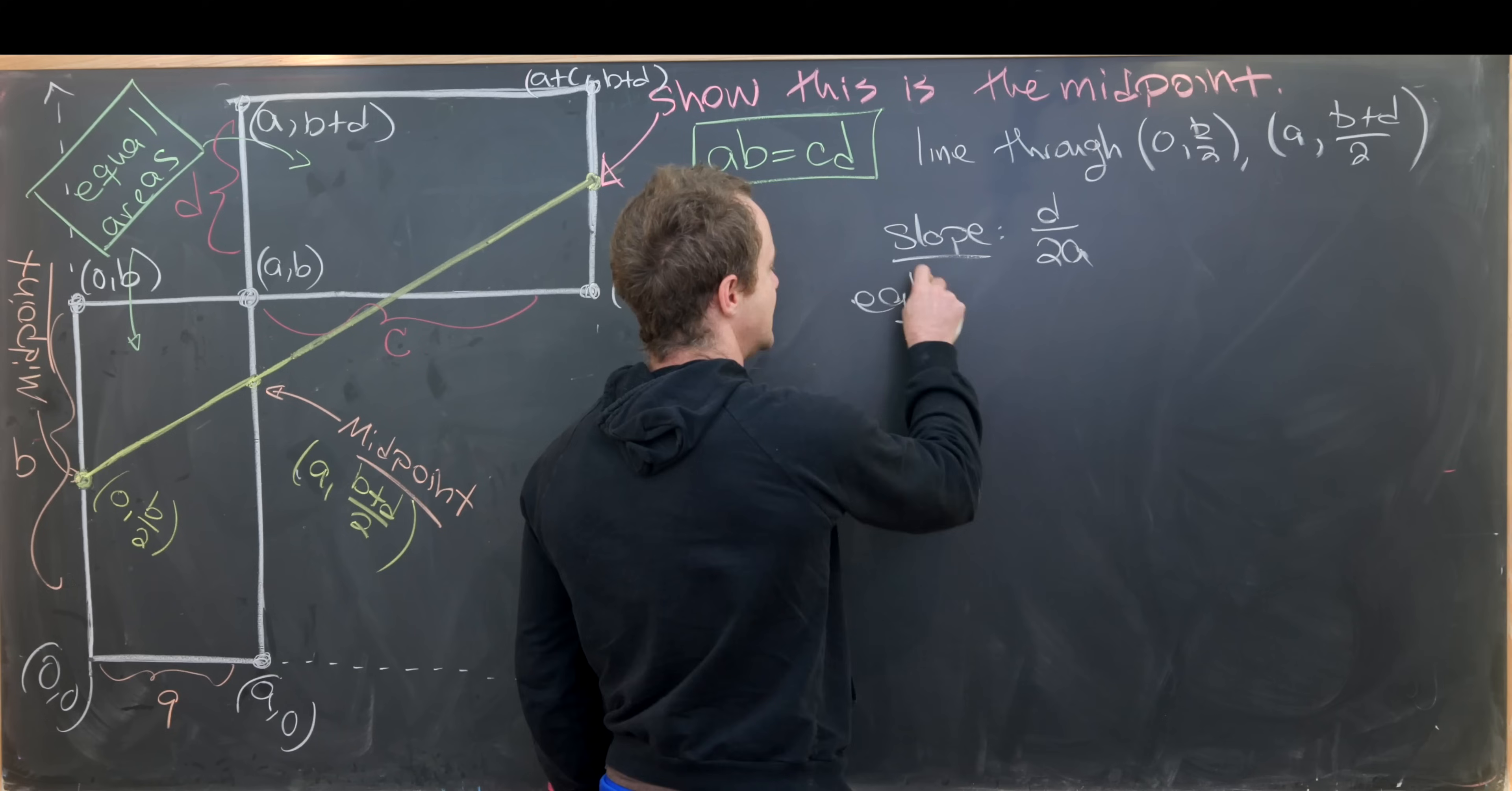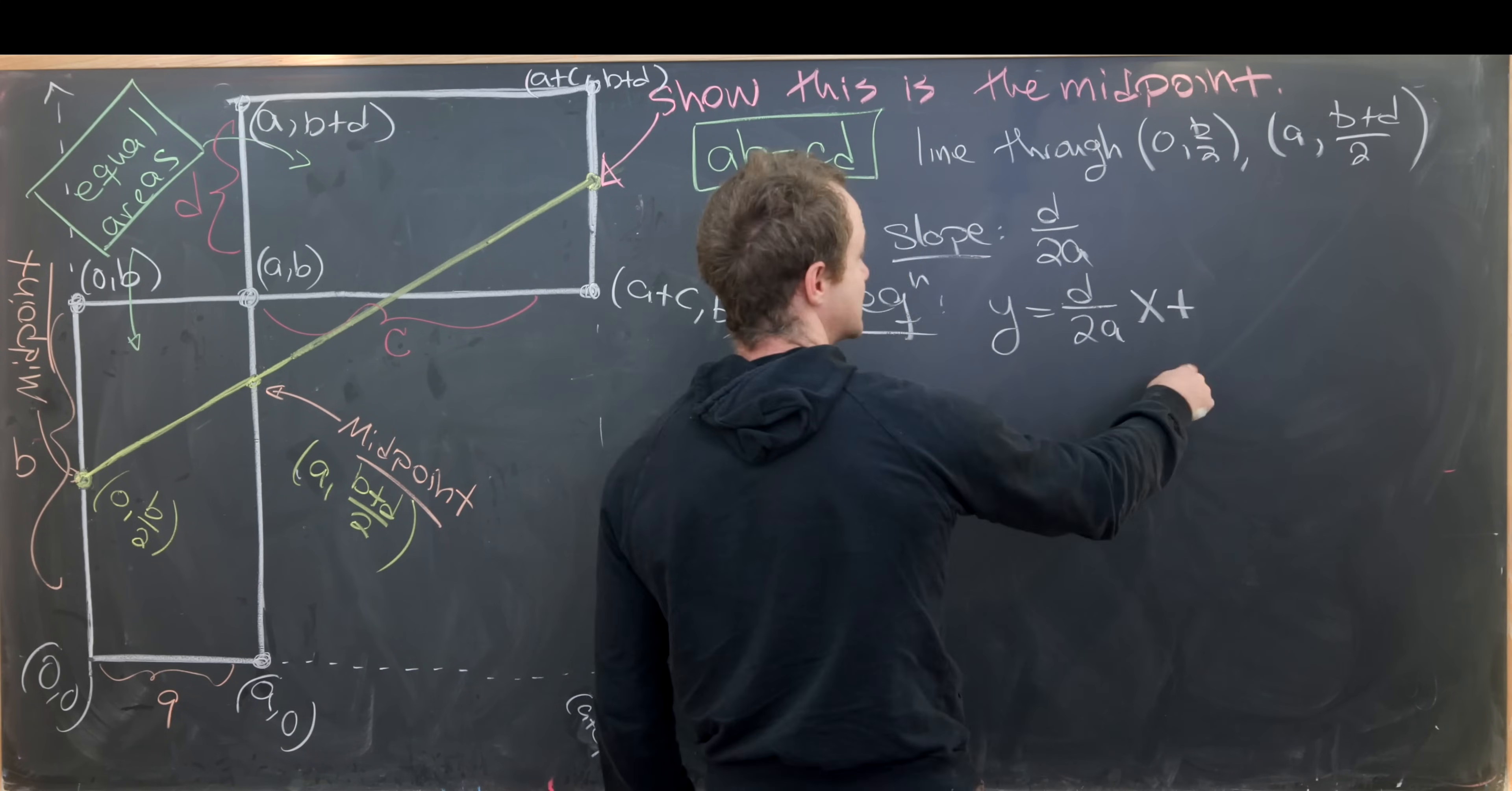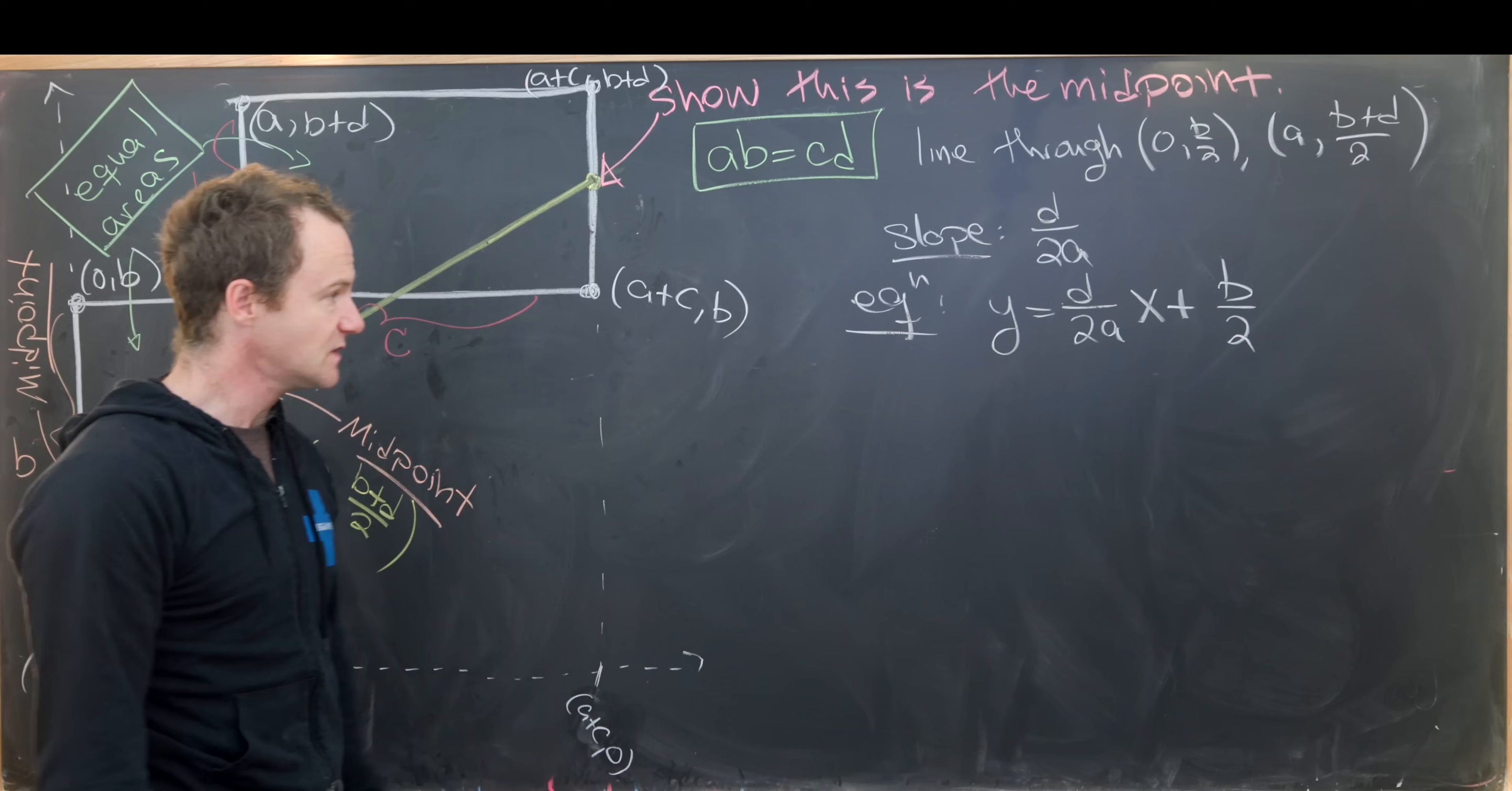So that means our equation is given by y = (d/2a)x + b/2, the y-intercept which is b/2, just by our construction over here where we put the y-axis.